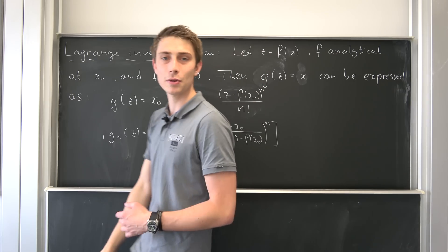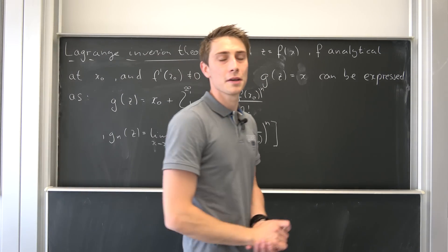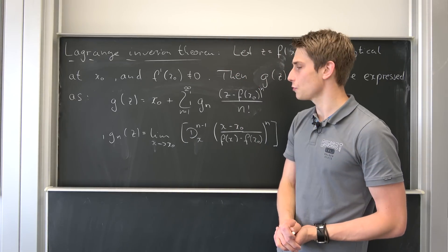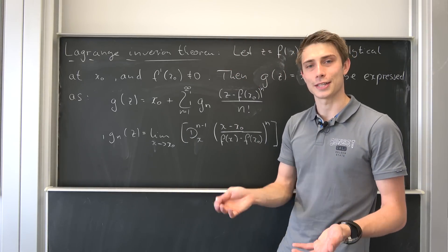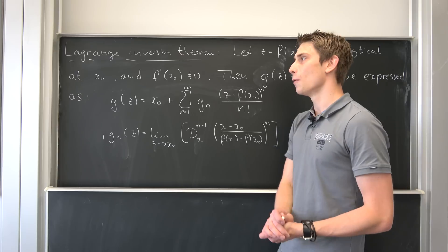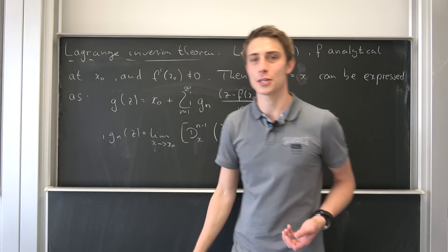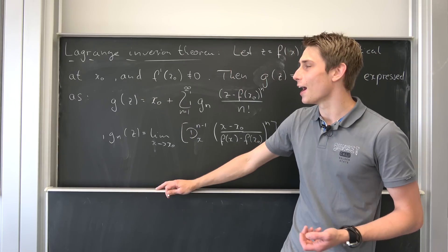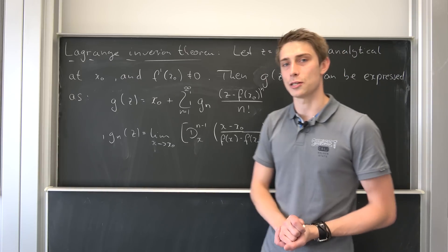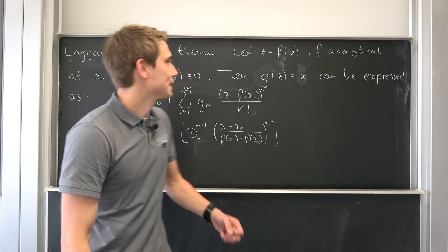This right here is the theorem I just talked about and we are going to take a look at it. We are going to work with it today to find out a Taylor series expansion for the Lambert W function. Some great guy called Lagrange — he was also a great physicist — found out something nice to reverse the Taylor series expansion, you could say.